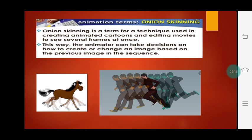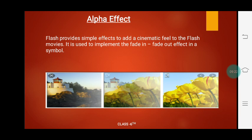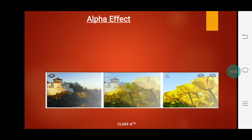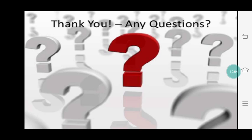Our last concept is the Alpha Effect. Alpha Effect means Flash provides simple effects to add a cinematic feel to the Flash movies. It is used to implement the fade in and fade out effect in a symbol — you can fade in or fade out the color of the image. This is all about the Alpha Effect. In the next period, I will show you the practical. Thank you, students, and have a nice day.